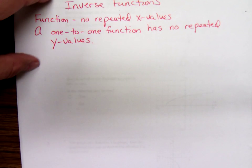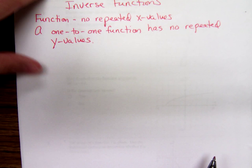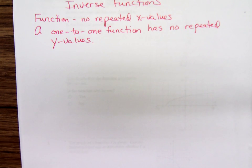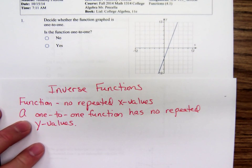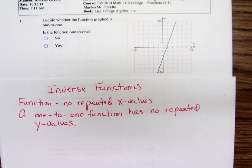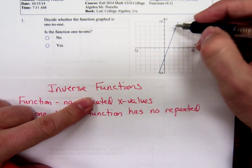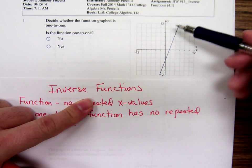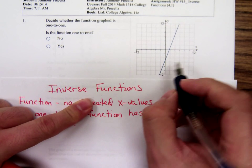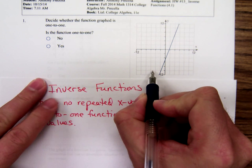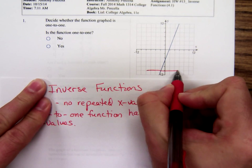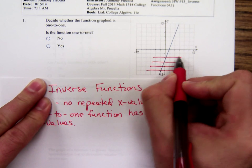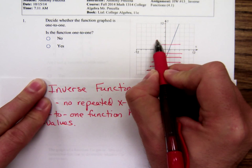When we look at a graph and try to decide if this graph is one-to-one, we're asking ourselves: are there any repeated y values? So if we had a slanted line, is this function one-to-one? Well, we know it's a function because it passes the vertical line test. To decide if this is a one-to-one function, you're going to ask yourself, if we drew a horizontal line through the graph, do horizontal lines cross it more than once? This is sort of like the vertical line test.